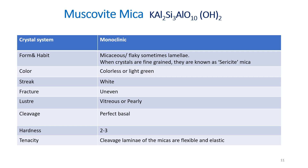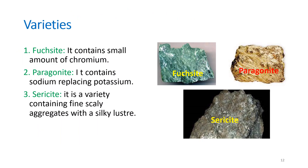Cleavage is perfect basal cleavage; hardness is very low at 2 to 3; and tenacity — most mica group minerals are flexible and elastic. Varieties of muscovite include: fuchsite (contains small amounts of chromium), paragonite (sodium replaces potassium), and sericite (very fine-grained with fine scaly aggregates exhibiting silky luster, unlike the pearly or vitreous luster of other micas).